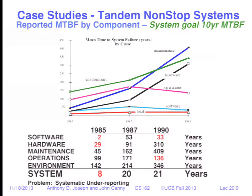Jim Gray, when he was at Tandem Non-Stop Computers — since purchased by HP — did a survey of failures in Tandem systems. These computers power NASDAQ, the New York Stock Exchange, large financial institutions, and airlines — businesses where every minute of downtime is millions to hundreds of millions in lost revenue, and also lost confidence. When NASDAQ has a computer problem, like during Facebook's IPO, everybody hears about it and reconsiders which market they should be in. Any kind of downtime in these systems is absolutely unacceptable.